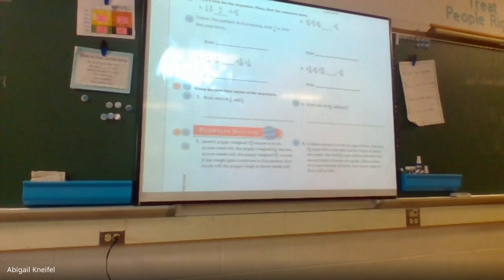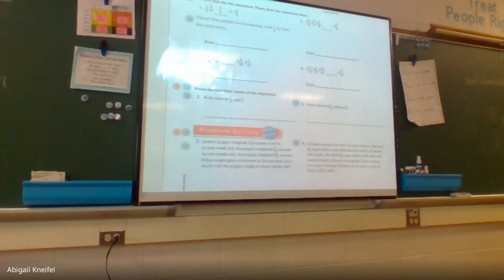We had to find the unknown terms — we had to find the rule, the difference between two digits, and then find the unknown number. Number three was: one and nine tenths, one and seven tenths, blank, one and three tenths, one and one tenth. How do I first find out the rule?